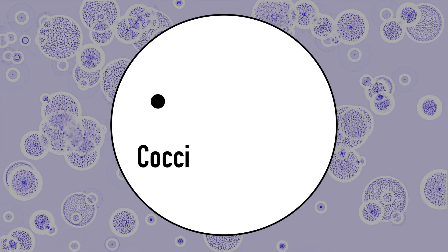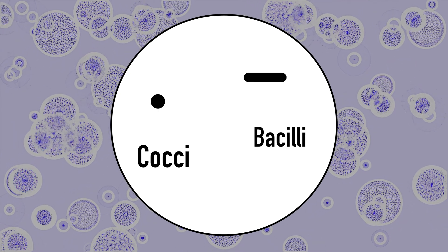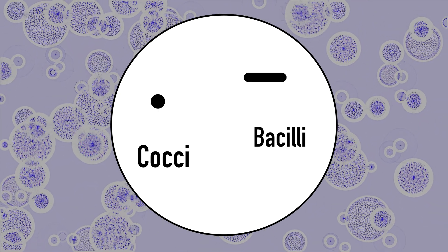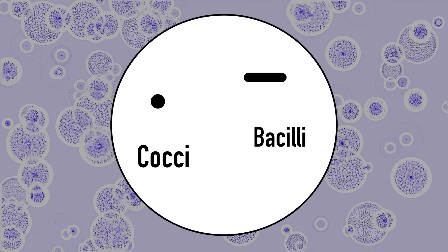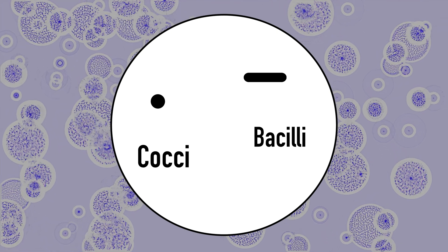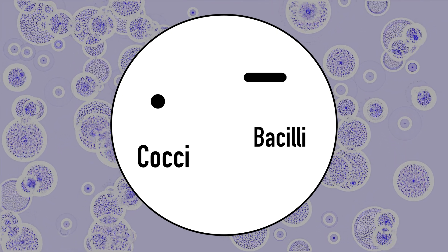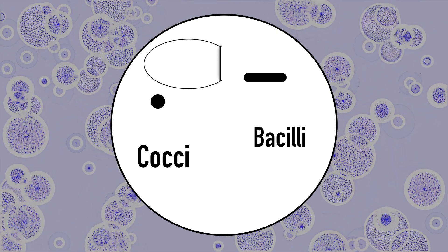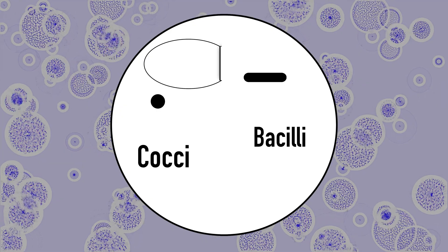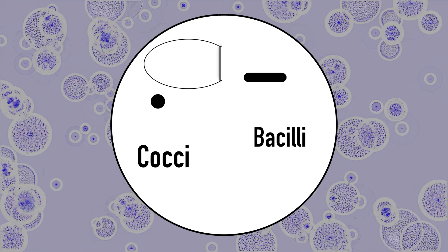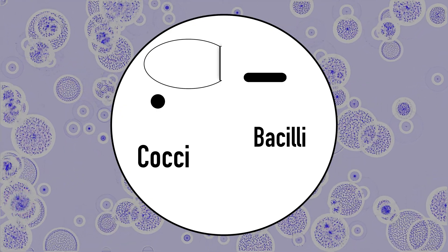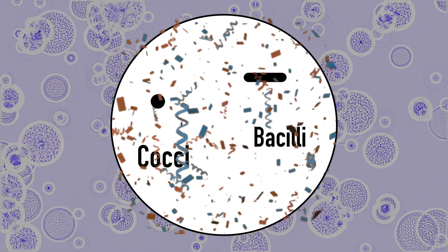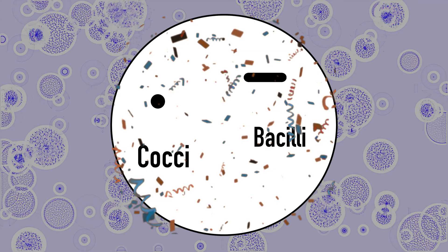Cocci and bacilli are the aerobic bacteria swimming around with the elements needed by the plants inside their bodies. When a protozoan or nematode preys on these bacterial crowds, that digested and expelled matter is now converted to plant-available nutrients.